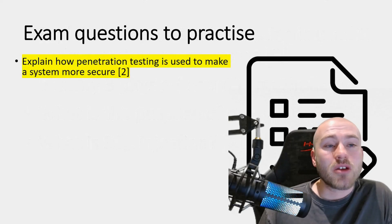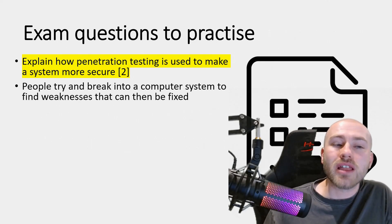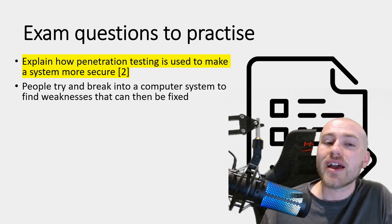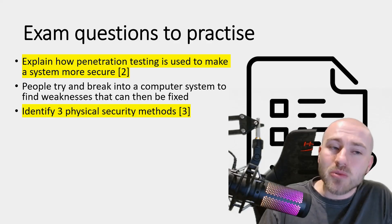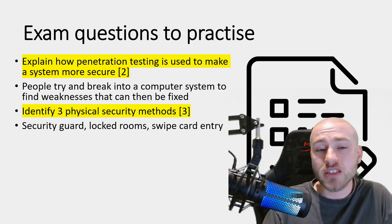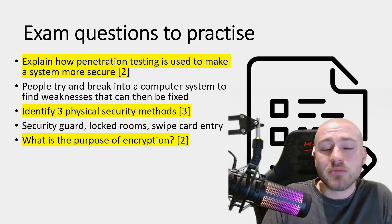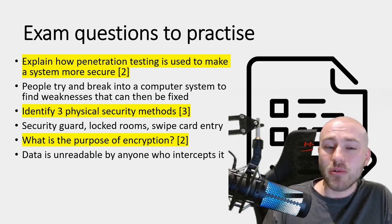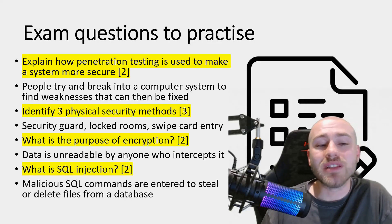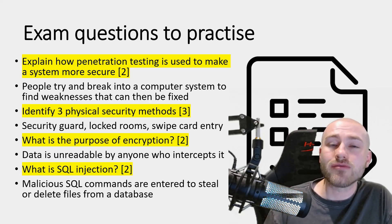Let's run through the answers. Penetration testing: people try to break into a computer system to find weaknesses that can then be fixed. Three physical security methods: security guard, locked rooms, swipe card entry. The purpose of encryption: data is unreadable by anyone who intercepts it. SQL injection: malicious SQL commands are entered to steal or delete files from a database.